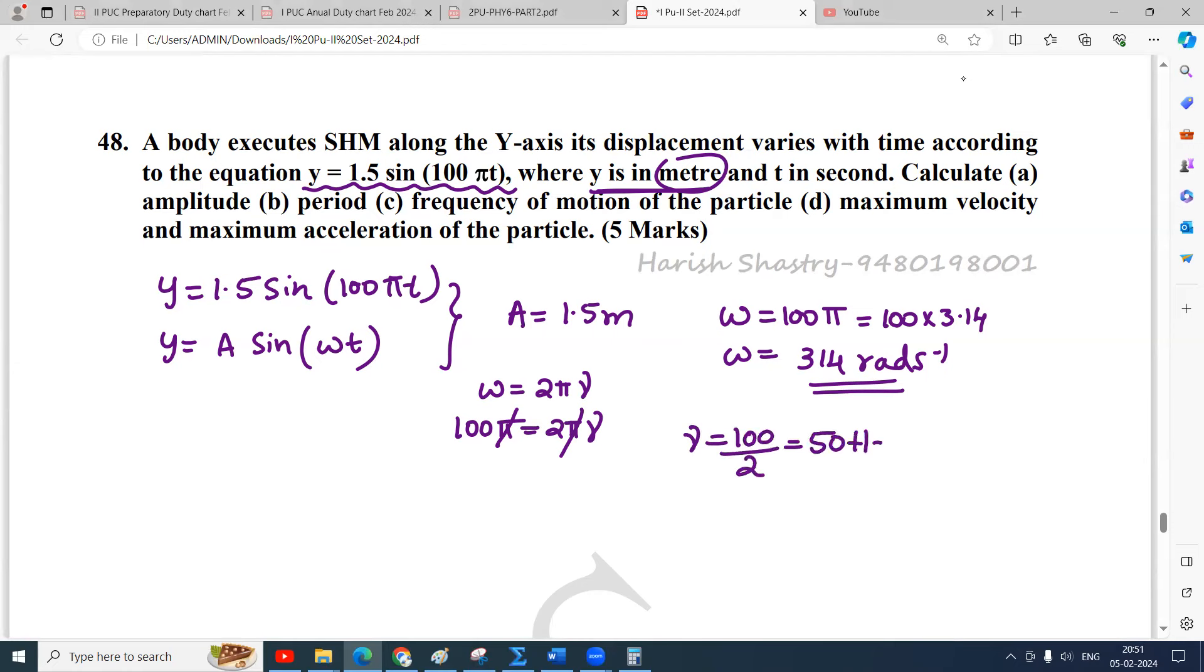So nu is over, amplitude is over, frequency is over. Period is 1 by nu, 1 by 50, which is 0.02 seconds. Period is over.